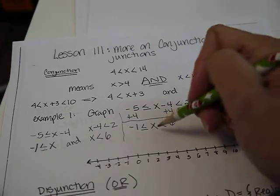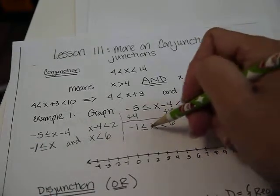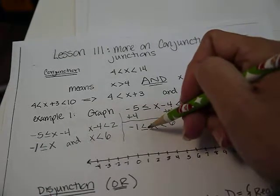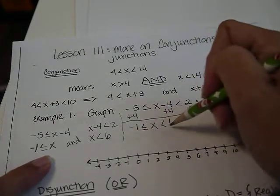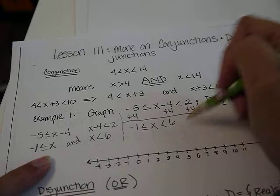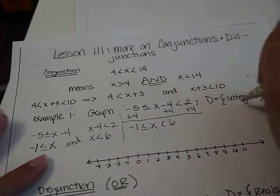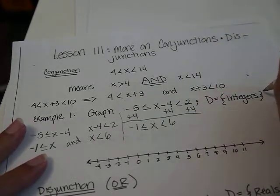So X is between negative 1 and 6, or X is greater than or equal to negative 1 and less than 6. So that's what we have here. Here we did it in one step, in that one inequality.